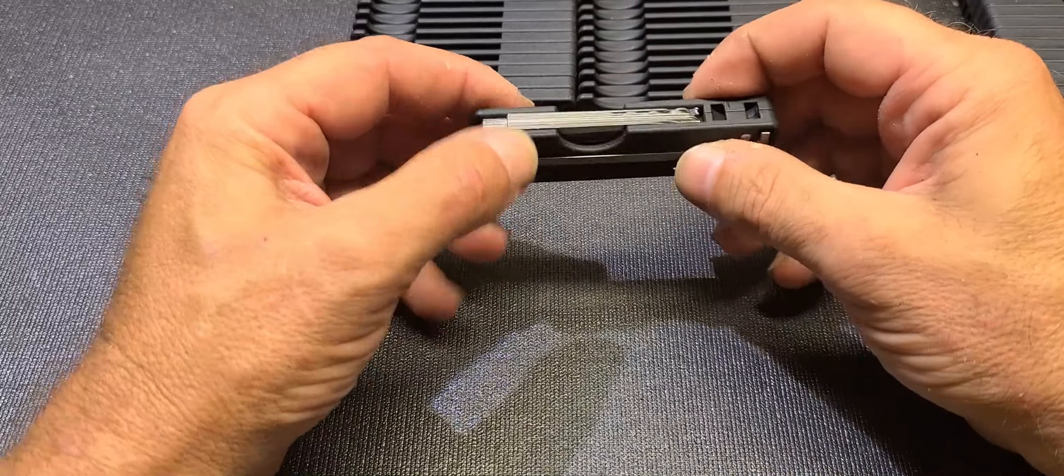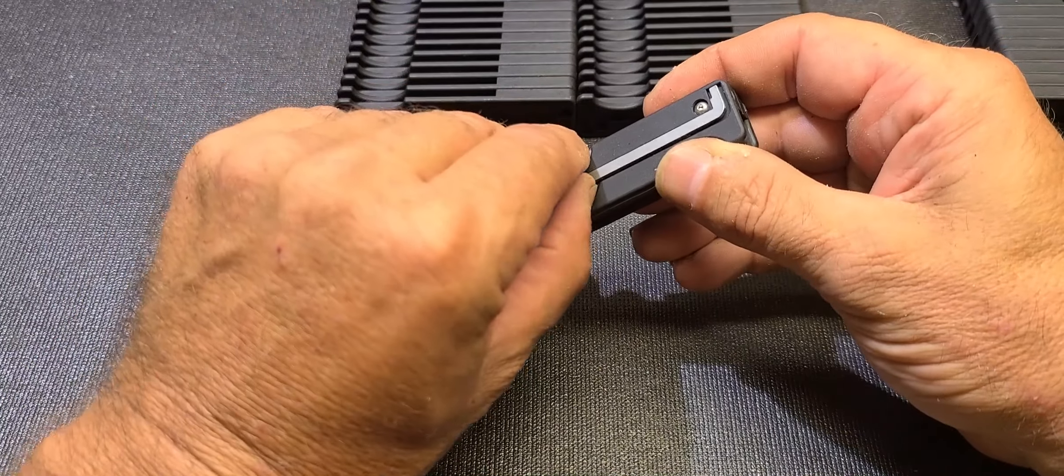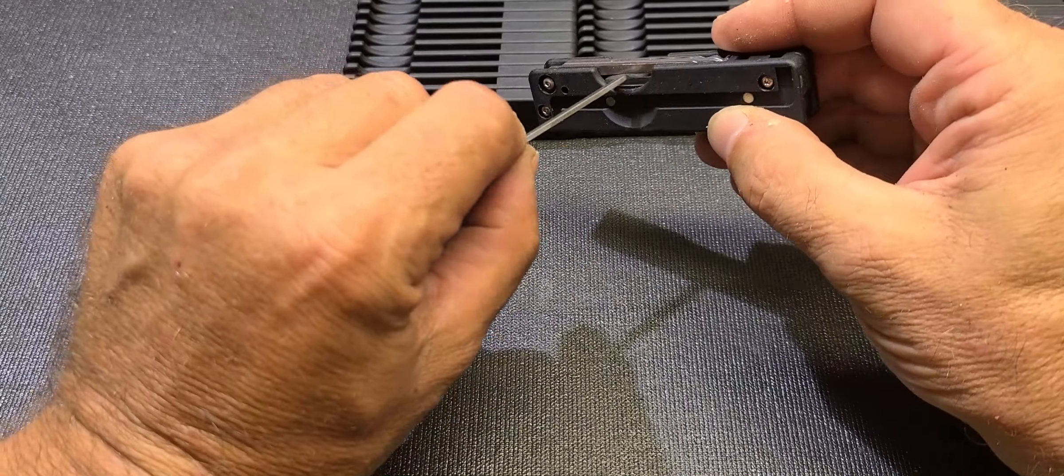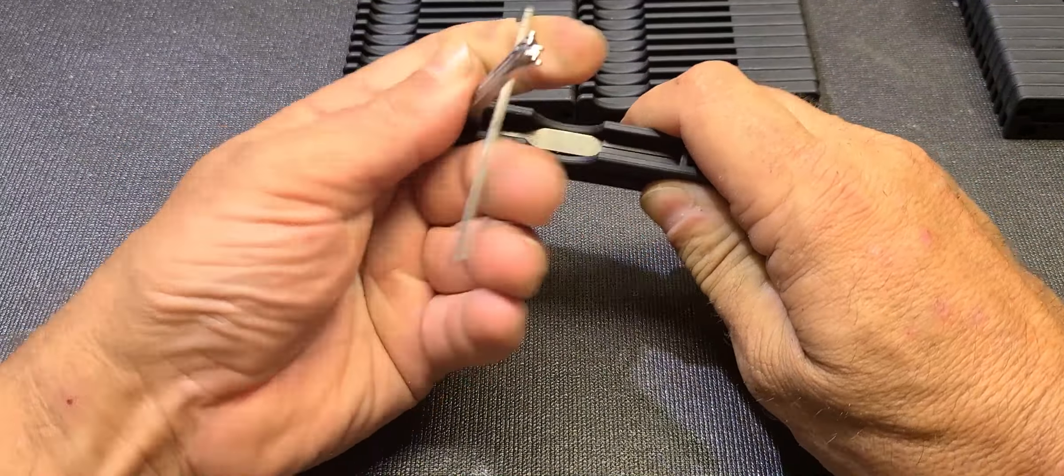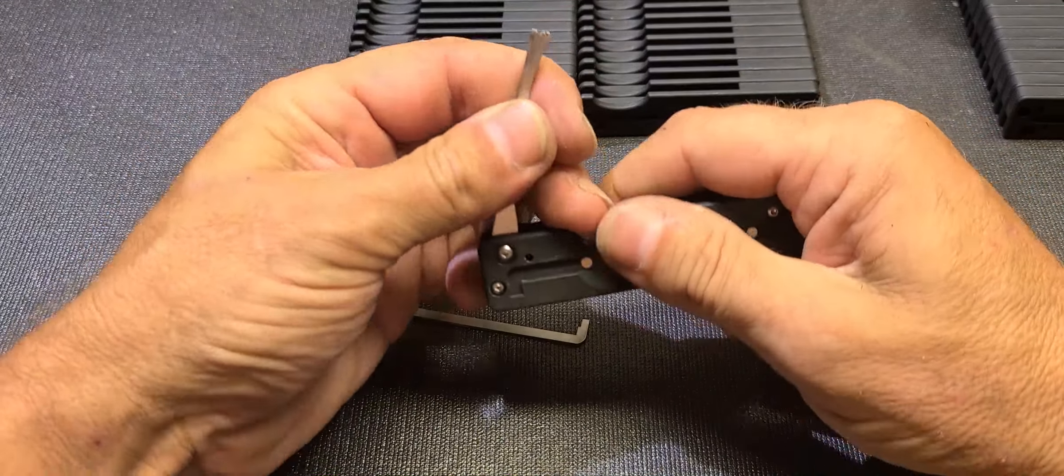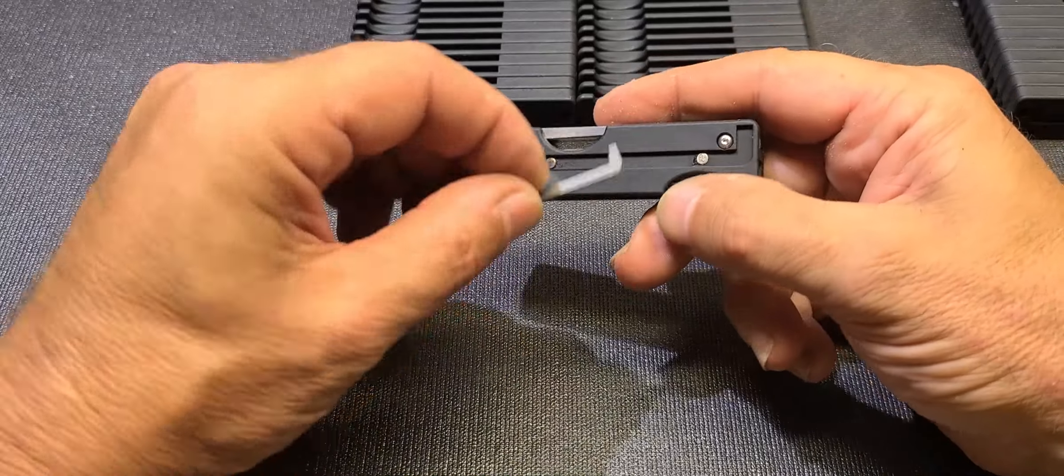So that's how you get the blades out. If you have a problem doing that—some people find that very stiff—you can take out the flat turner and use that to do the levering to get those out. So that's a bit of a workaround for you if you find that a little too stiff to open.